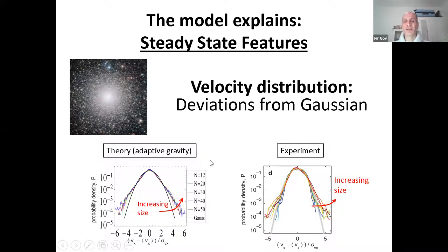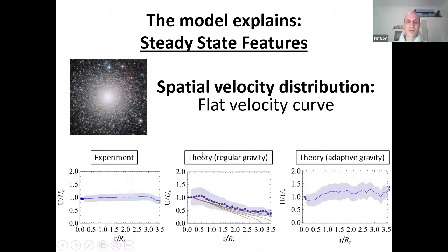If you want to look at further distributions, like the probability density, to get some velocity within the cloud, like you have in an experiment, where again, with increasing size, there was a larger and larger deviation from this Gaussian distribution, we now resort to simulations. And this is a simulation with now with the adaptive gravity. And you can see that we recover the same kind of qualitative trends that are observed in the experiment.